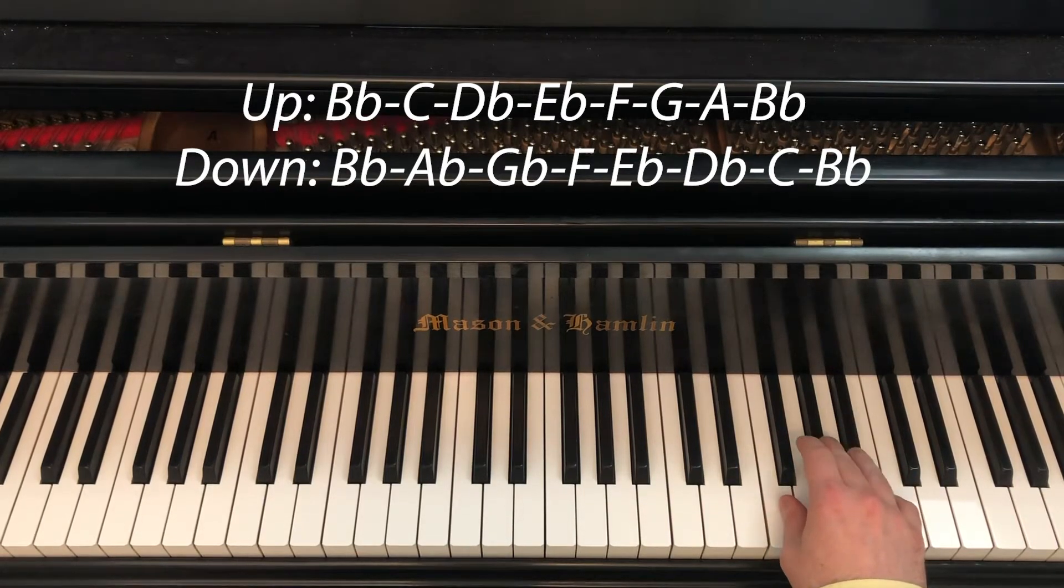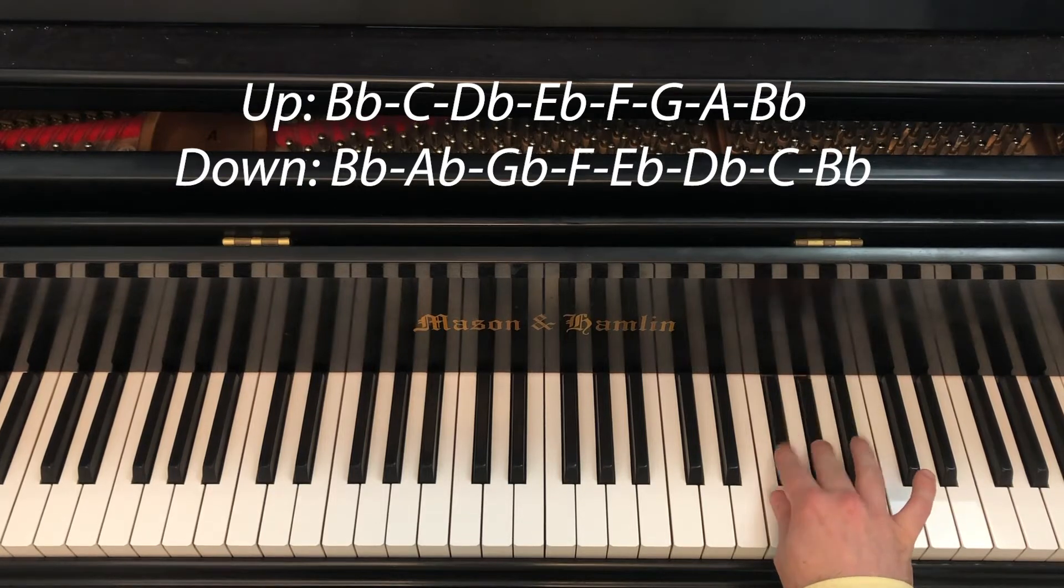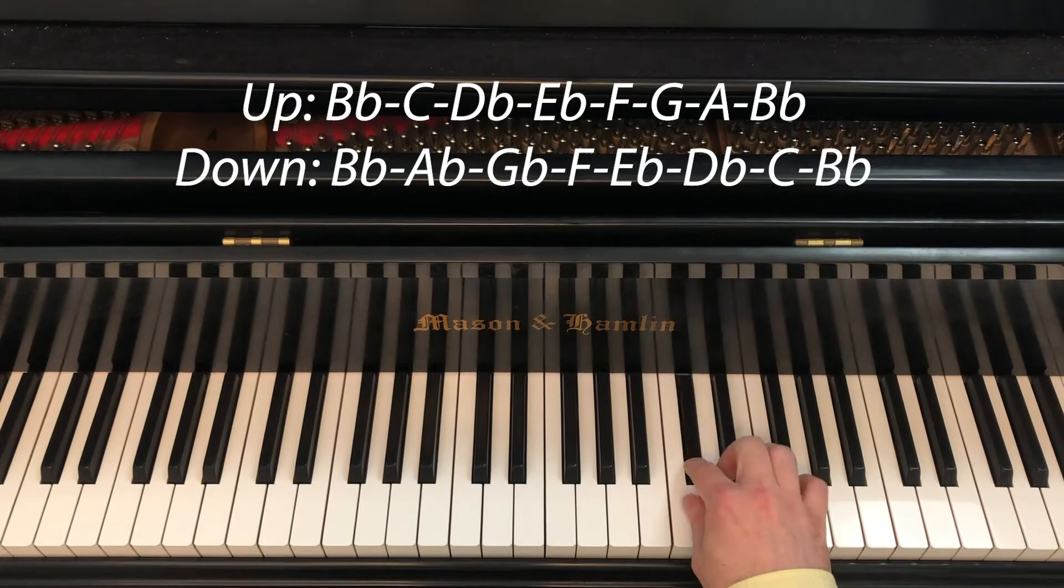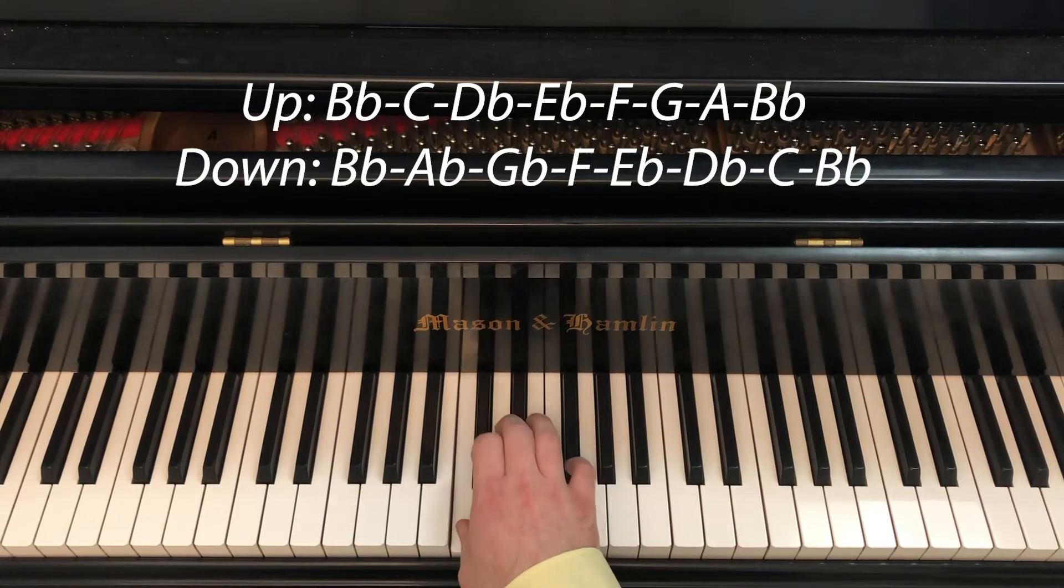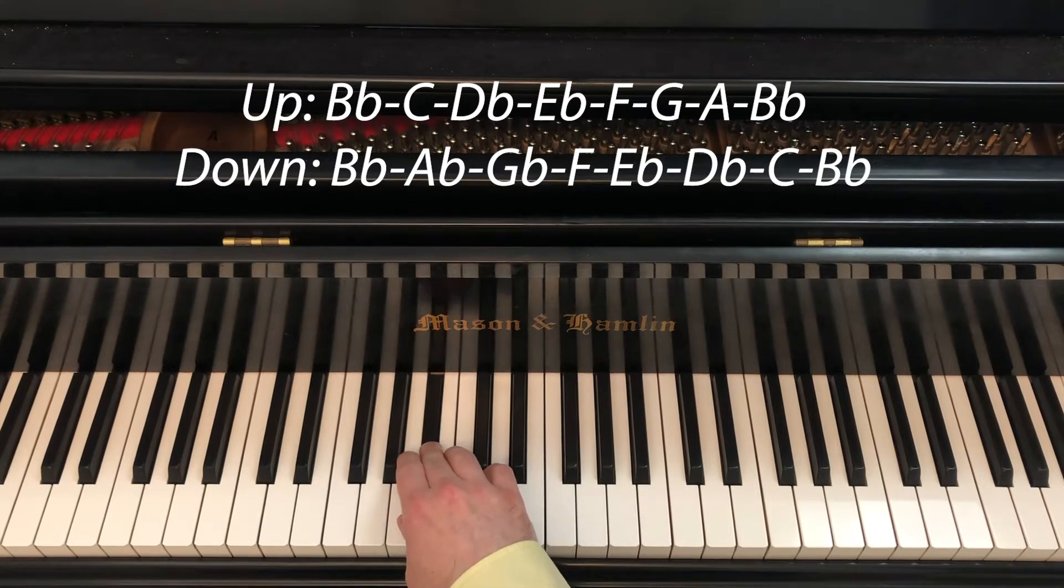Coming down is four, three, two, one starting on B-flat, A-flat, G-flat, F. Then three, two, one on E-flat. Four, three, two, one on B-flat. Three, two, one on E-flat, then B-flat at the end.